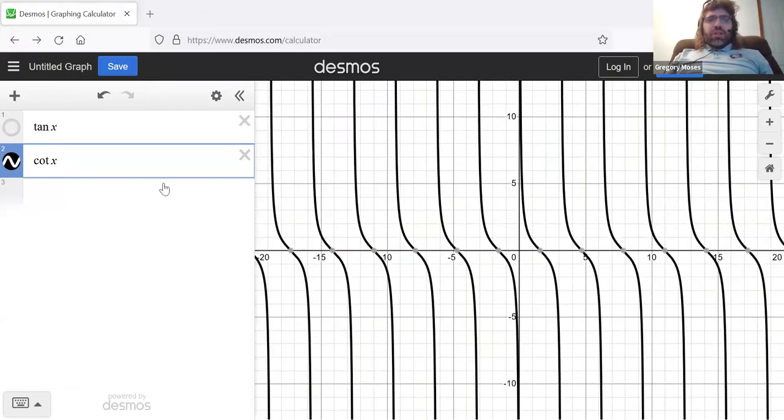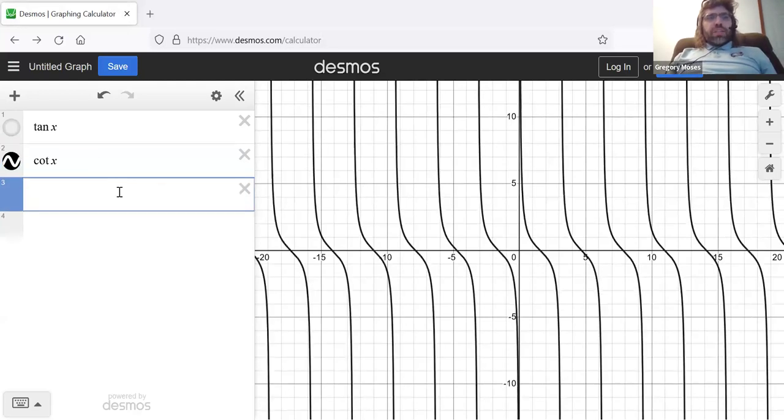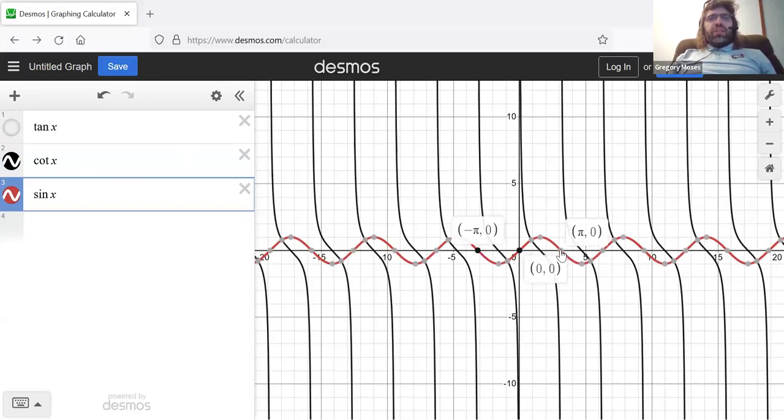So, the tangent is the sine over the cosine. The cotangent is the cosine over the sine. Just like in the case of the tangent, this denominator function keeps being zero, and everywhere that it's zero, we get a vertical asymptote. Just like the tangent, the period here is π.